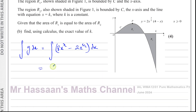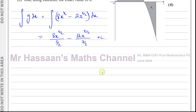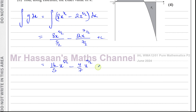To integrate, add 1 to the power and divide by the new power. So 8x to the 3 over 2 becomes 8x to the 5 over 2 divided by 5 over 2, and minus 2x to the 5 over 2 becomes minus 2x to the 7 over 2 divided by 7 over 2 — since 5 over 2 plus 1 is 7 over 2. Simplifying: dividing by a fraction means multiplying by its reciprocal, giving 16 over 5 times x to the 5 over 2 minus 4 over 7 times x to the 7 over 2.